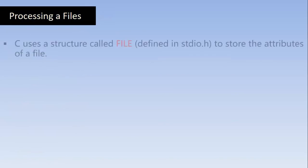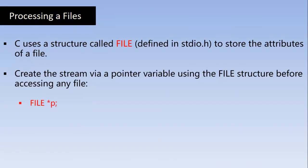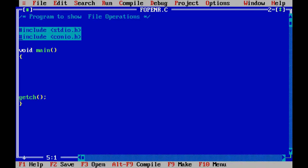Before doing any of these file operations, we must create a pointer to the FILE structure. FILE is a predefined structure which is already there in stdio.h. We are just going to create a pointer to the FILE structure. By doing that we can have access to all the file operation functions. In this program I am going to show you how we can handle files using file handling operations, so we must create a pointer of type FILE to deal with file related operations.